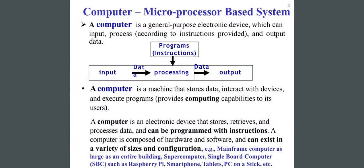A computer is a general-purpose electronic device which can input, process according to instructions provided, and output data. The three main things are input, processing, and output. Data is taken as input, the program instructions handle processing, and the result is received as output data.